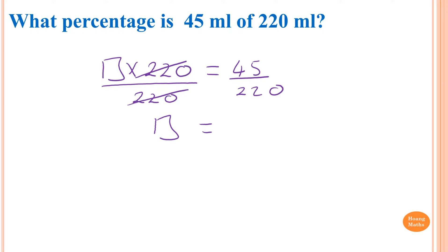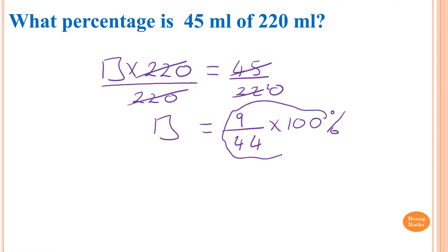So this one is just a fraction. If you simplify that: divide by 5, that gives me 9/44. But this is in terms of fractions, and we want it in terms of percentage, so we multiply by 100. I just use the calculator and type exactly these numbers in, which gives me 20 and 5/11 percent.